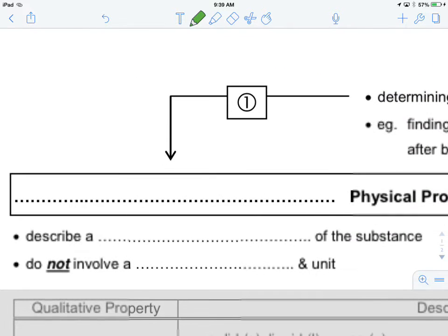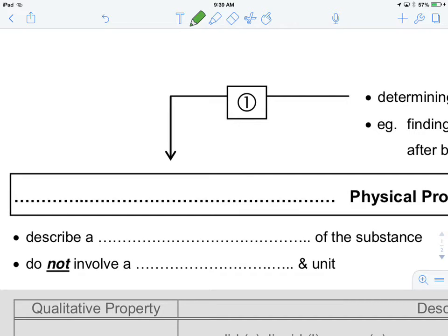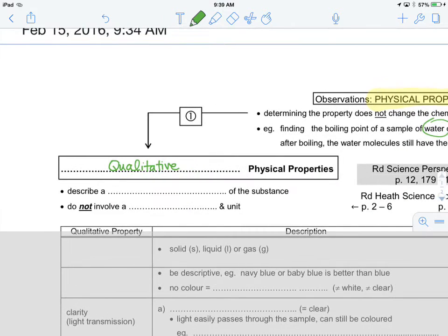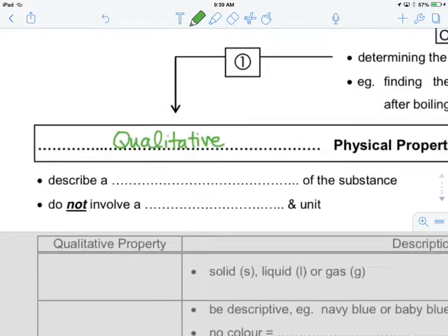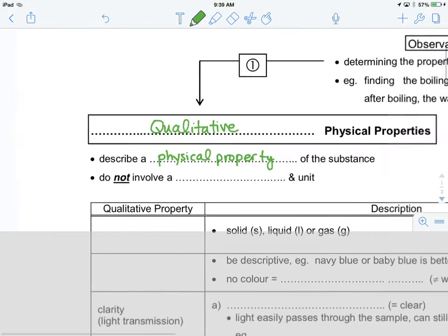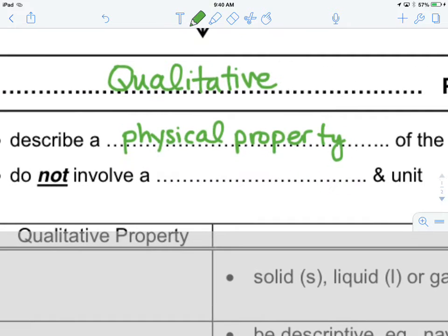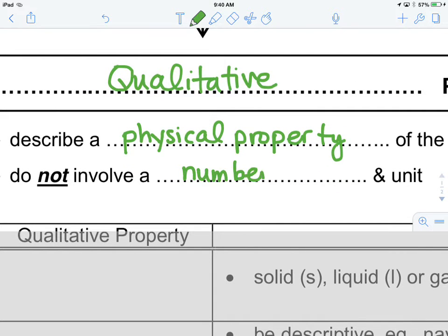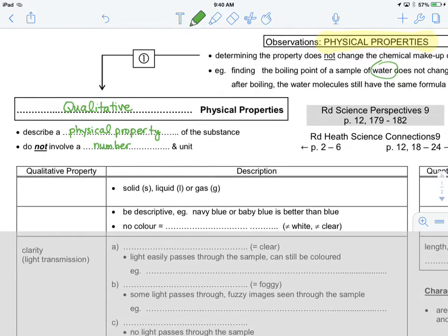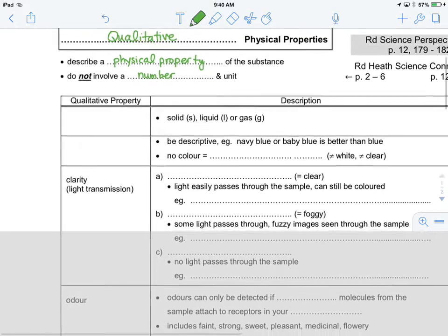The first type of physical property is what is known as a qualitative physical property. A qualitative physical property has two things that we're going to talk about. First of all, it describes physical property of the substance and it does not involve a number and a unit. Some examples of this are found in the chart below.